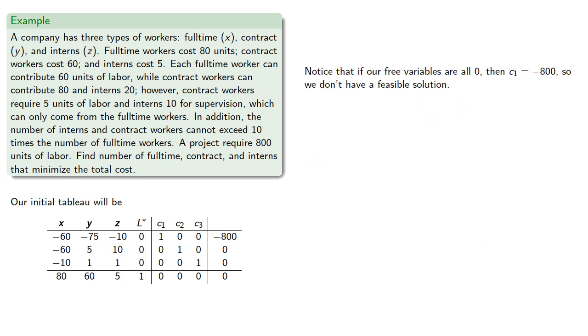Now, notice that if our free variables are all 0, then c1 must be negative 800, so we don't have a feasible solution. And so we'll pivot on the first row on the x-coefficient. That's the first variable in the first equation with a negative constant. So if we pivot this way, this makes x a basic variable, and c1 will be our new free variable.